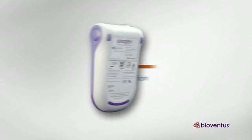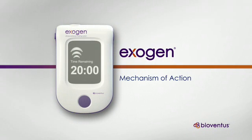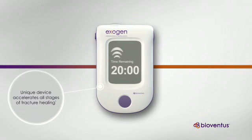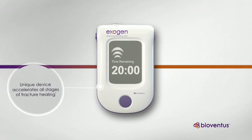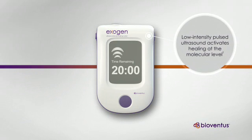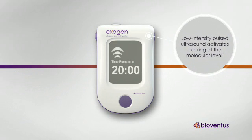The Exogen Ultrasound Bone Healing System is a unique device that accelerates all stages of the fracture healing process. Using low-intensity pulsed ultrasound, Exogen activates a biological healing response at the molecular level.